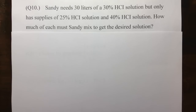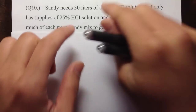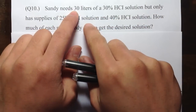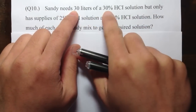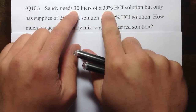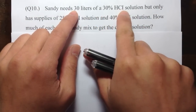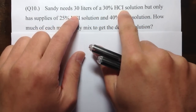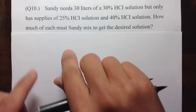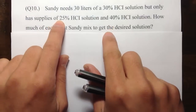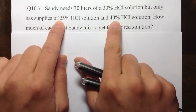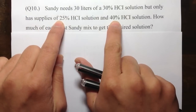Question number 10 is a classic mixture question. We need to make 30 liters of 30% HCl solution, but we only have the 25% and the 40% solutions to begin with.